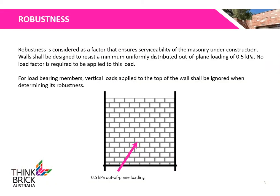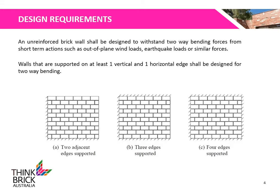Robustness is considered as a factor that ensures serviceability of the masonry under construction. Walls shall be designed to resist a minimum uniformly distributed out-of-plane loading of 0.5 kPa. For load-bearing members, vertical loads applied to the top of the wall shall be ignored when determining robustness. An unreinforced brick wall shall be designed to withstand two-way bending forces from short-term actions such as out-of-plane wind loads or earthquake loads. Walls supported on at least one vertical and one horizontal edge shall be designed for two-way bending.